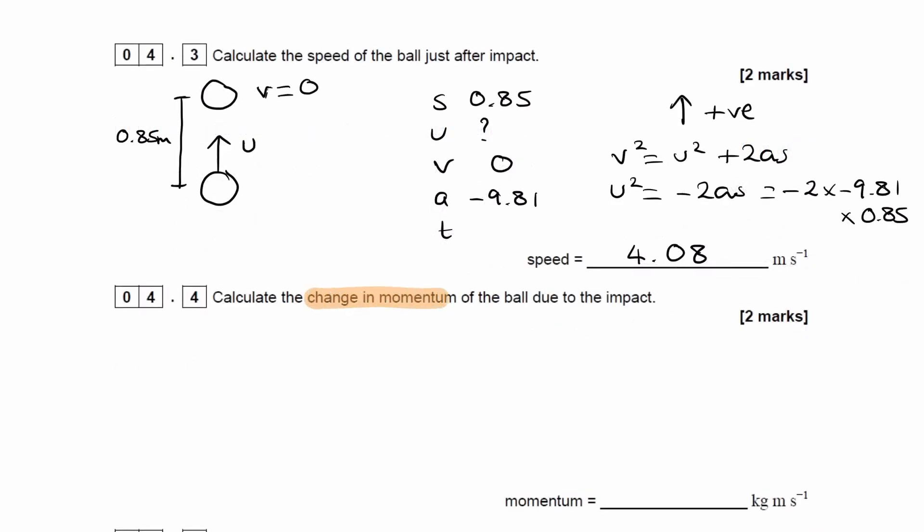For 4.4, calculate the change in momentum of the ball due to impact. So change in anything is always the final of that thing minus the initial of that thing. So final momentum minus initial momentum. So this will be equal to the mass of the object times its final velocity minus the mass of the object times its initial velocity. So I can factorize out the mass. That's the same. It's the same object, so the mass is the same. That doesn't change. We get this.